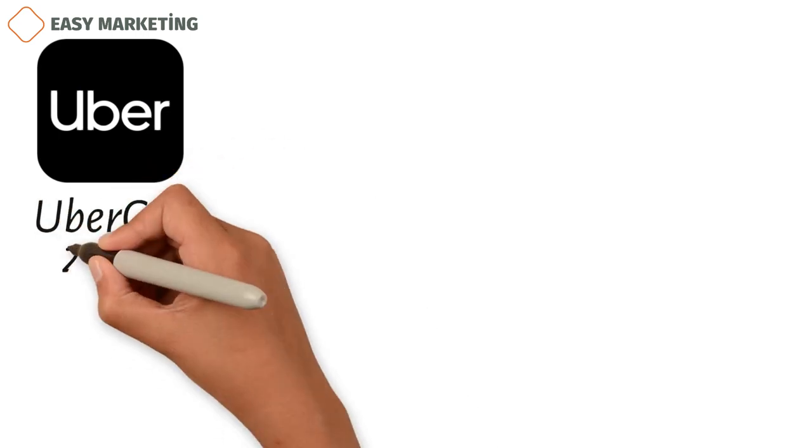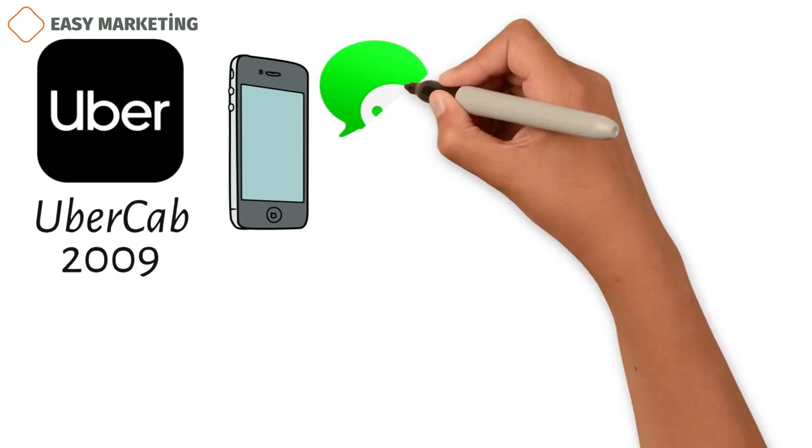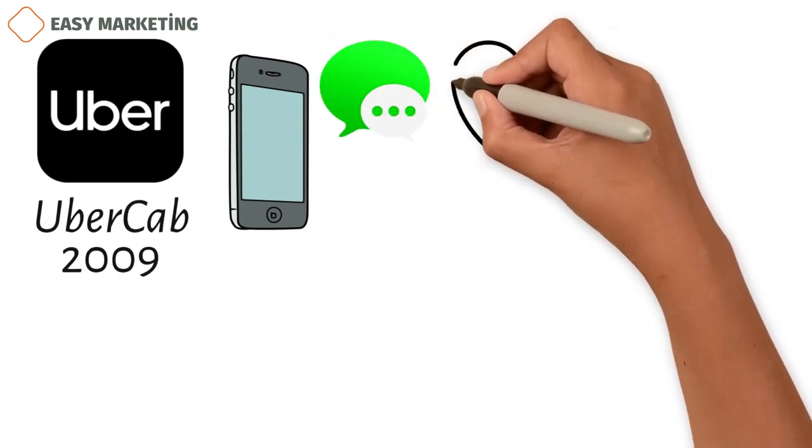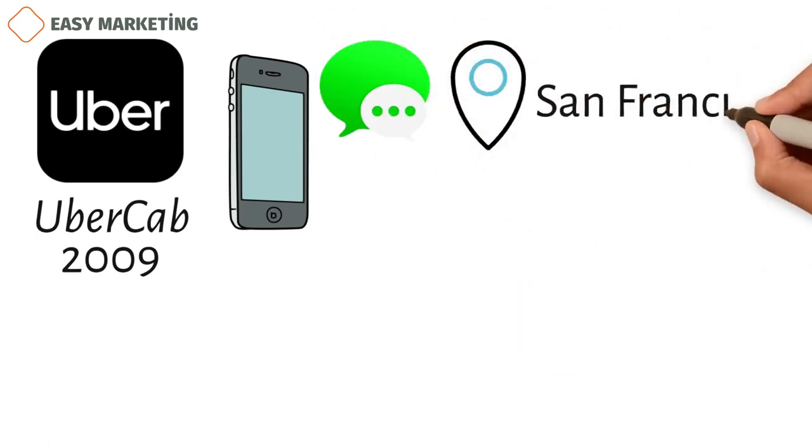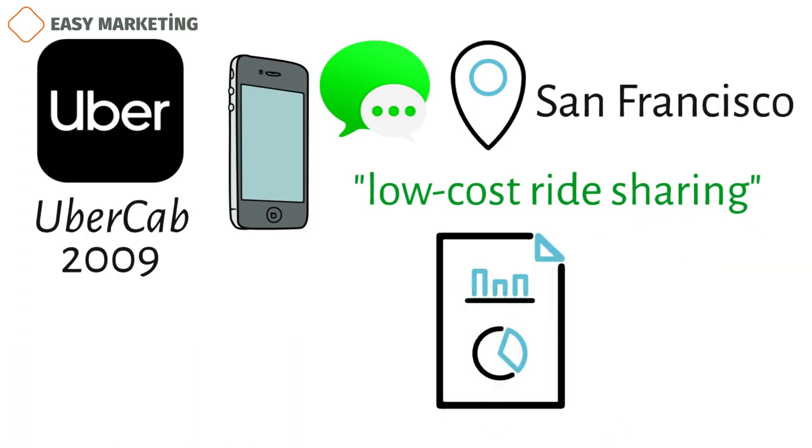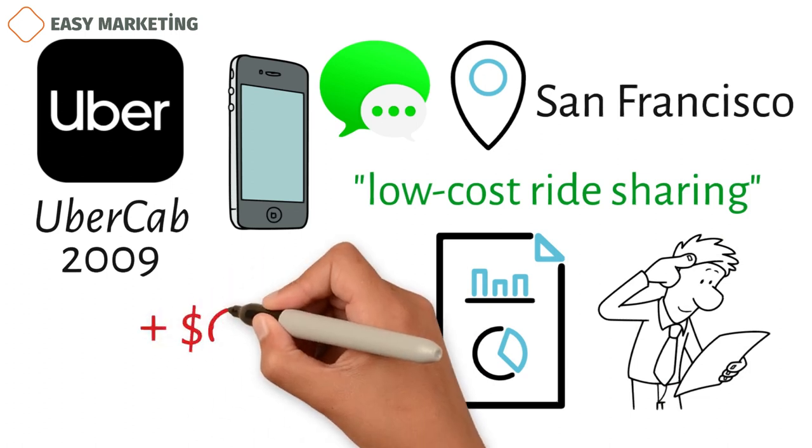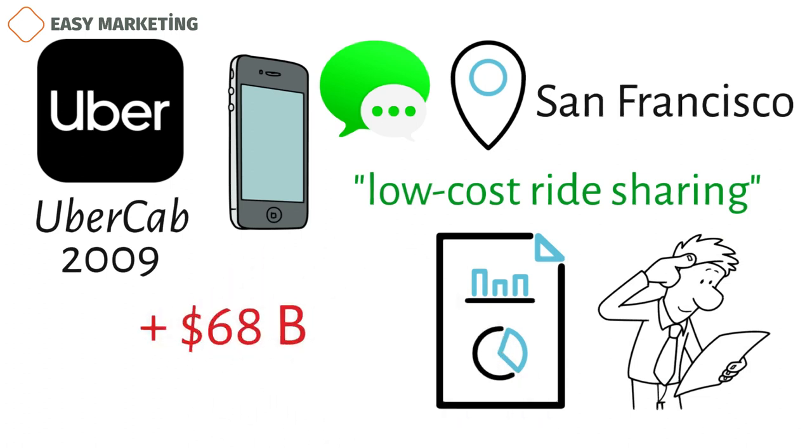Uber. When Uber, then called Uber Cab, started in 2009, you could only use it on an iPhone or by sending an SMS, and it was only available in San Francisco. Uber's MVP was enough to show that the idea of a low-cost ride-sharing business could work. Validated data and lessons learned from the first app helped Uber quickly grow to where it is now. At the moment, Uber has a global market capitalization of more than $68 billion and works in close to 80 countries.